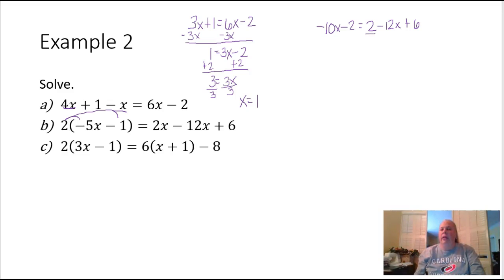Let's combine our like terms over here. We've got negative 10x minus 2 equals negative 12x plus 8. Let's get all our x's on one side so we'll add this 12x over here. That gives us 2x minus 2 is equal to 8, and if we add 2 we have 2x equal to 10. When we divide by 2 it turns out that x is equal to 5, so this one also has a unique solution.